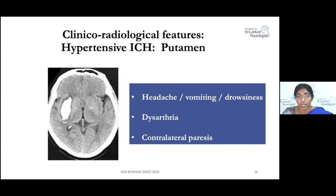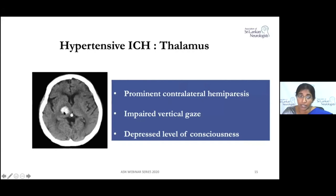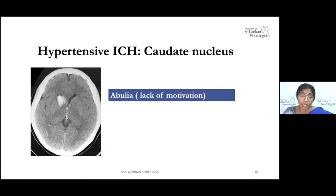Patients present with hemiparesis, headache, vomiting, drowsiness, or dysarthria. A plain CT can reveal a putaminal or basal ganglia bleed. Thalamic bleeds present with contralateral hemiparesis, vertical gaze palsy, and decreased consciousness — vertical gaze palsy occurs because the midbrain lies just beneath the thalamus. The reticular activating system's connection with the thalamus explains the drowsiness. Caudate nucleus bleeds generally produce few neurological signs except abulia, which is a lack of motivation.